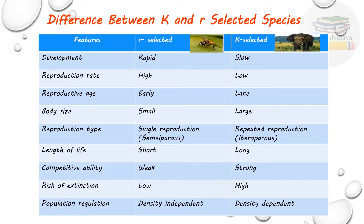Reproductive age is early in R selected species and late in K selected species. Body size: R selected species are small and K selected species are large.